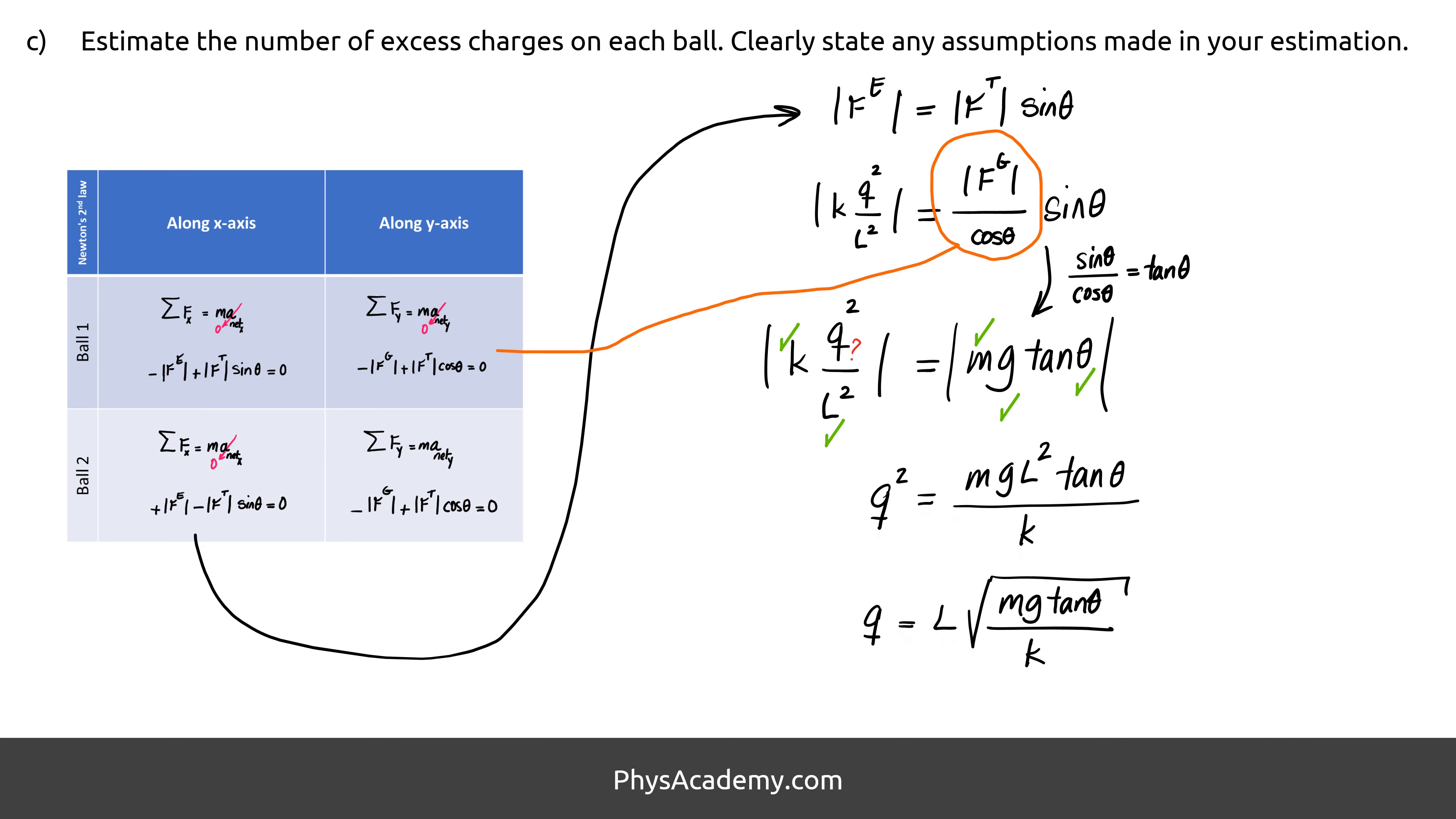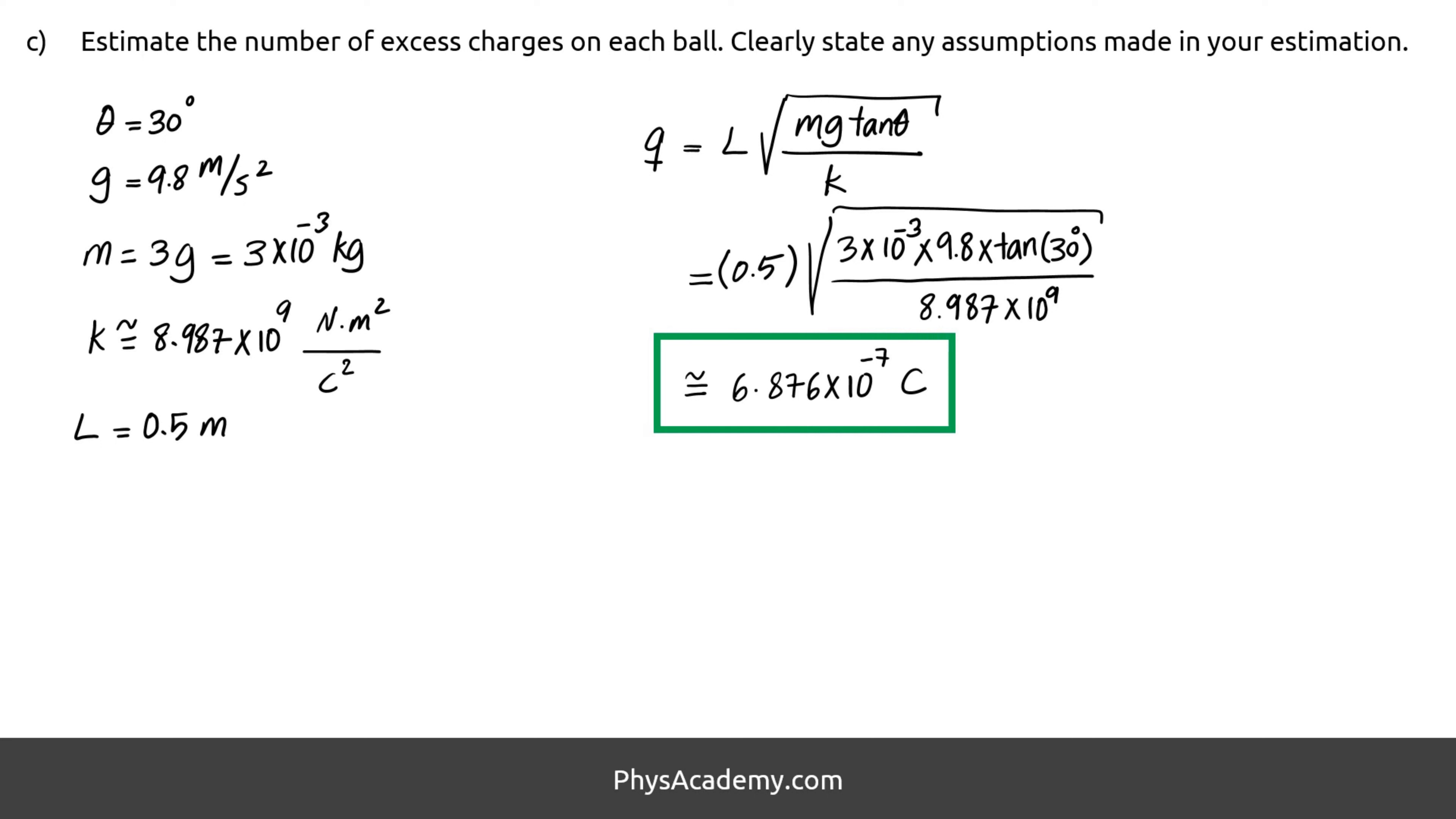Let's rearrange this equation and find the numerical value of Q. After plugging in the known values, we get 6.876 times 10 to the negative 7 coulombs. But remember, we are asked to find the number of charges.